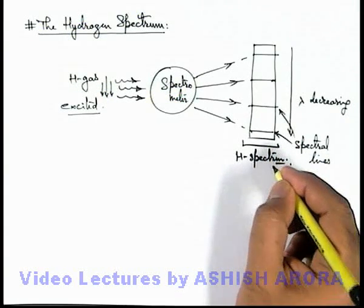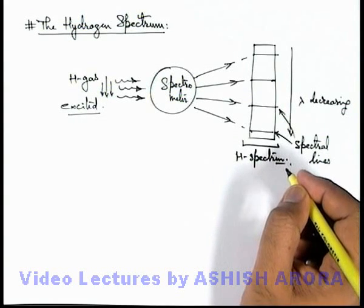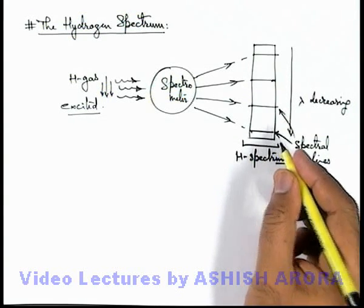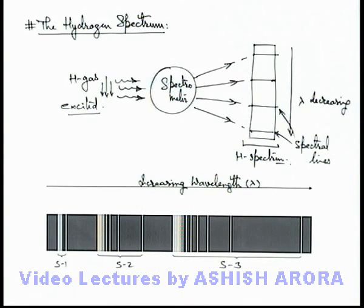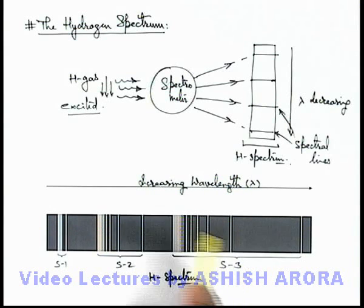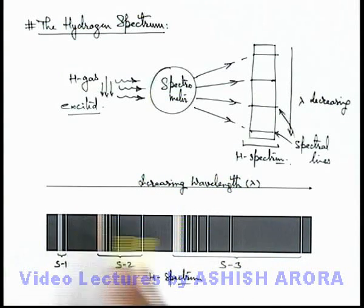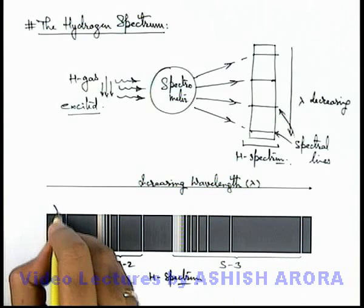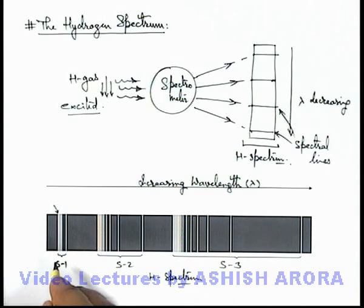Let us first have a look at a specific hydrogen spectrum of which the photograph is taken in a laboratory. This is the real picture of the hydrogen spectrum, taken by a spectrometer when different wavelengths are allowed to be incident from hydrogen gas onto the spectrometer. Here you can see the spectrum is in increasing order of wavelengths from left to right. The leftmost line plotted corresponds to the least wavelength or maximum energy.